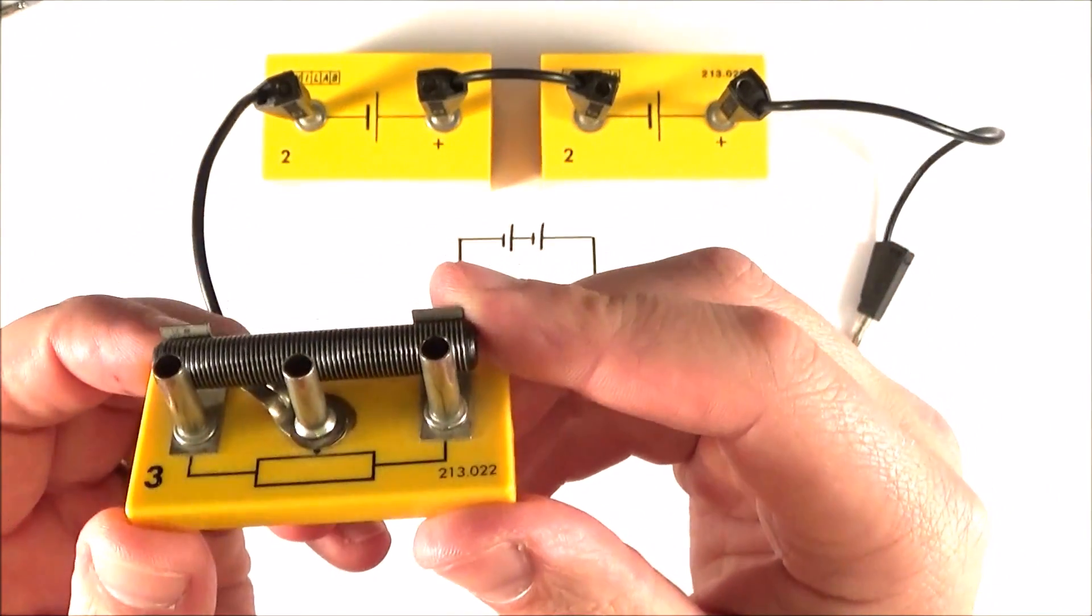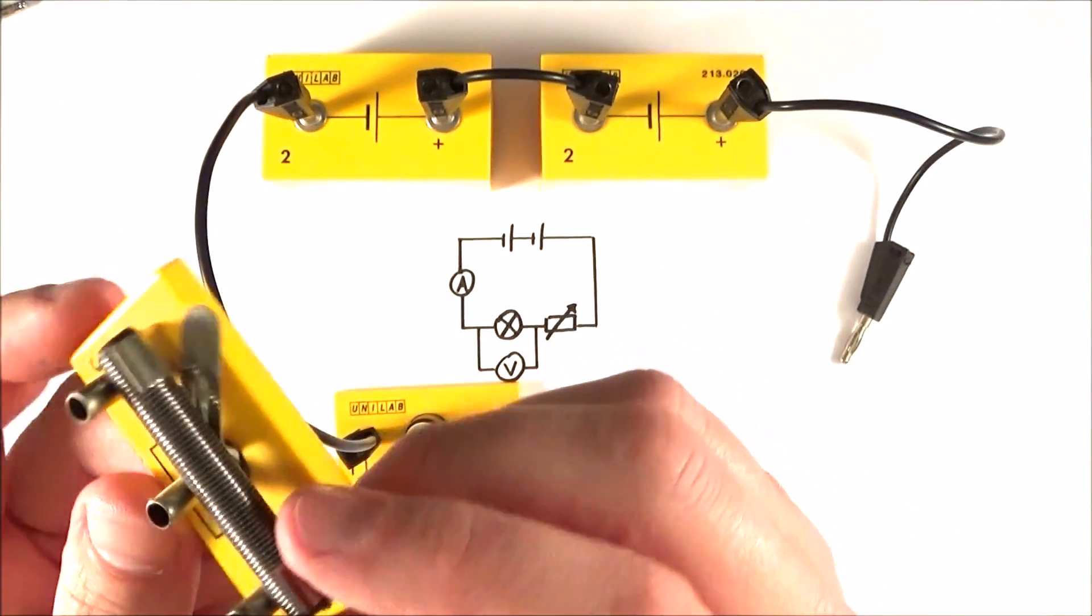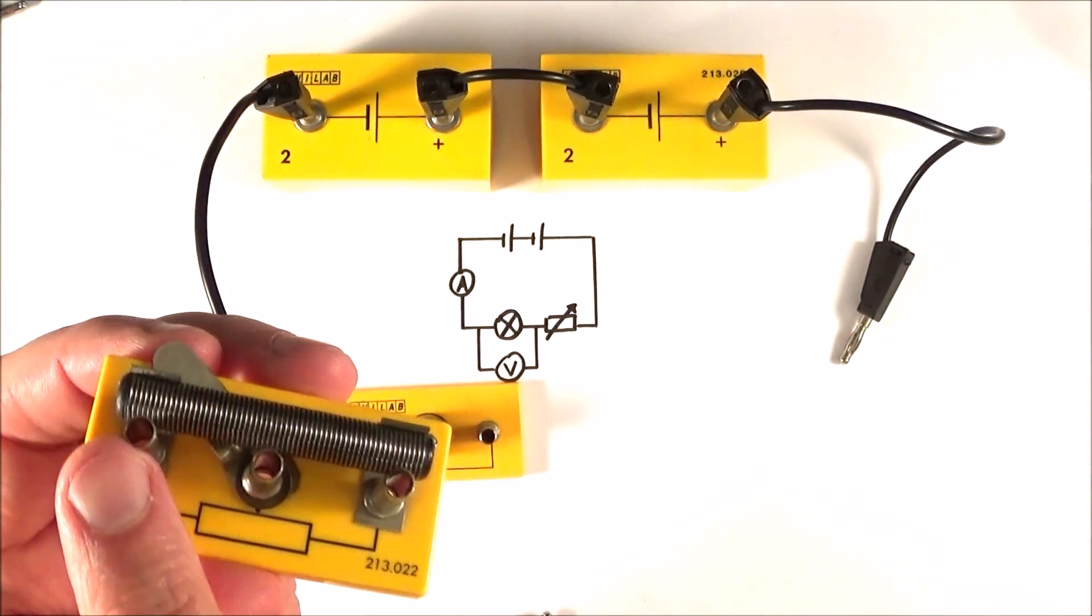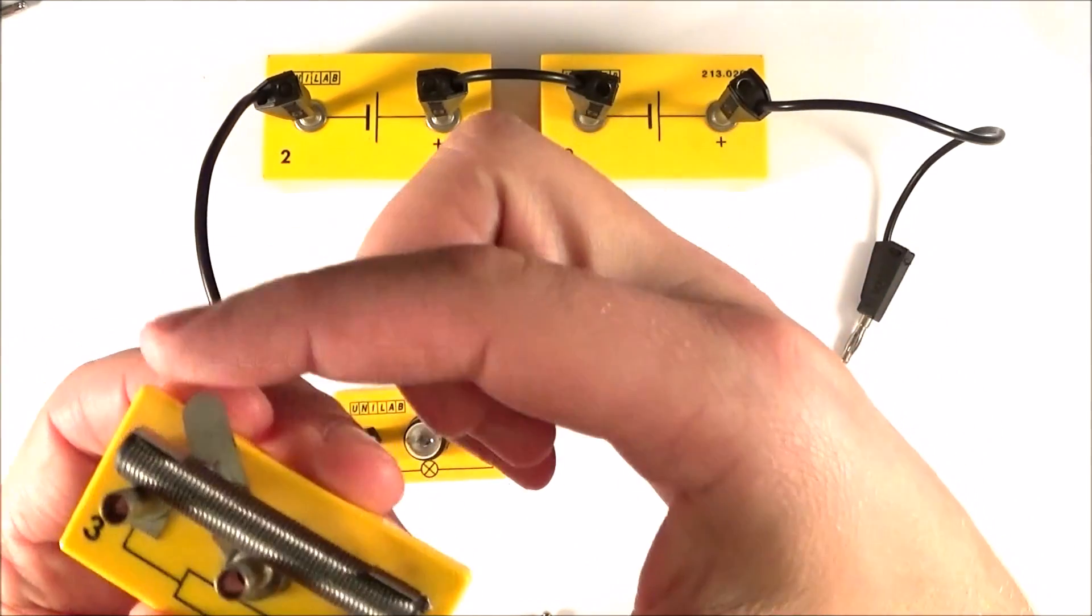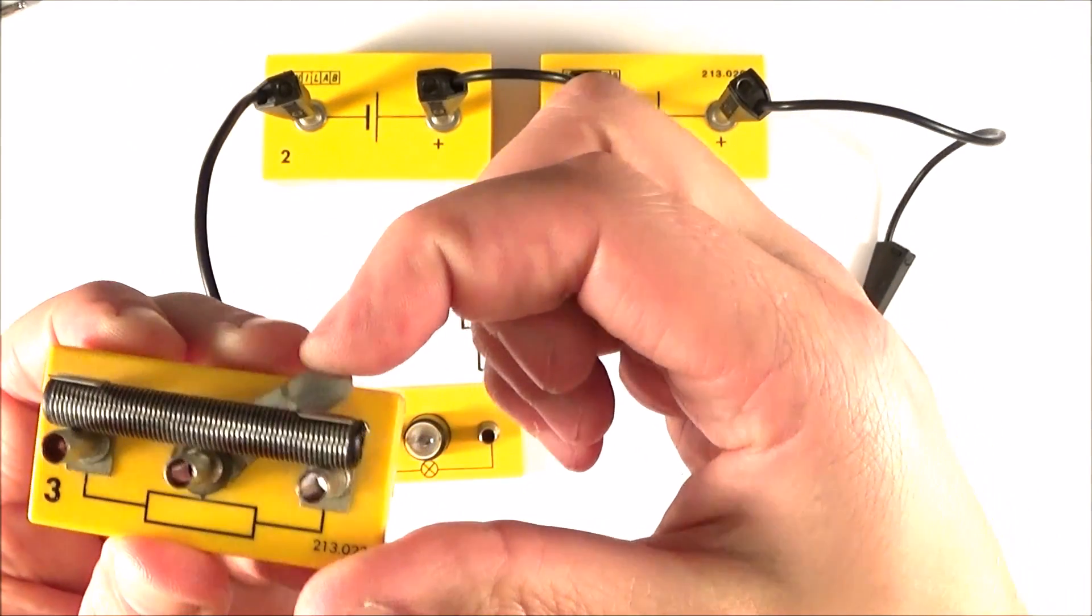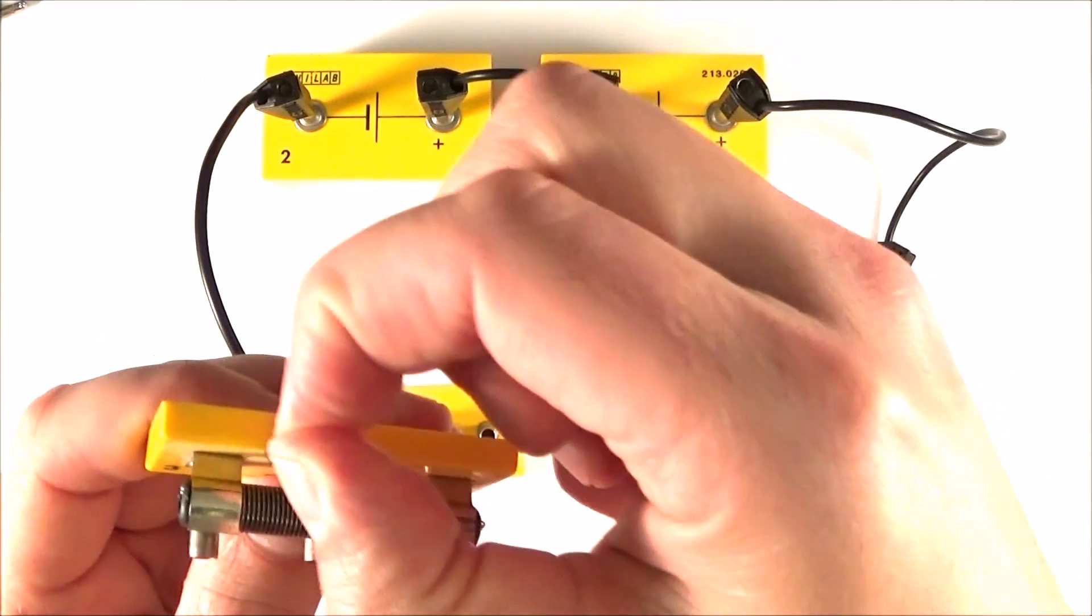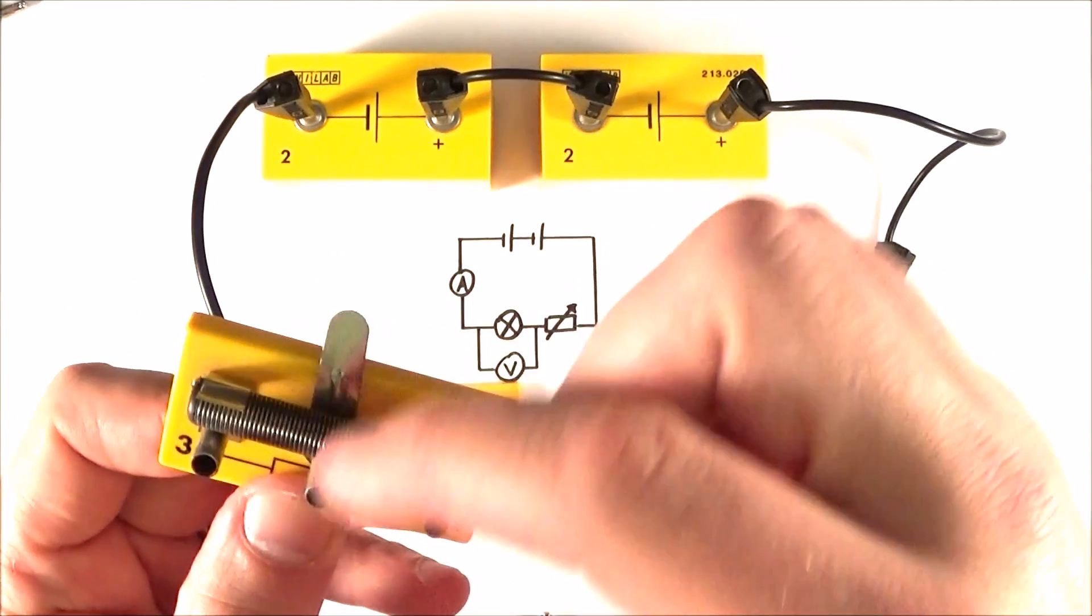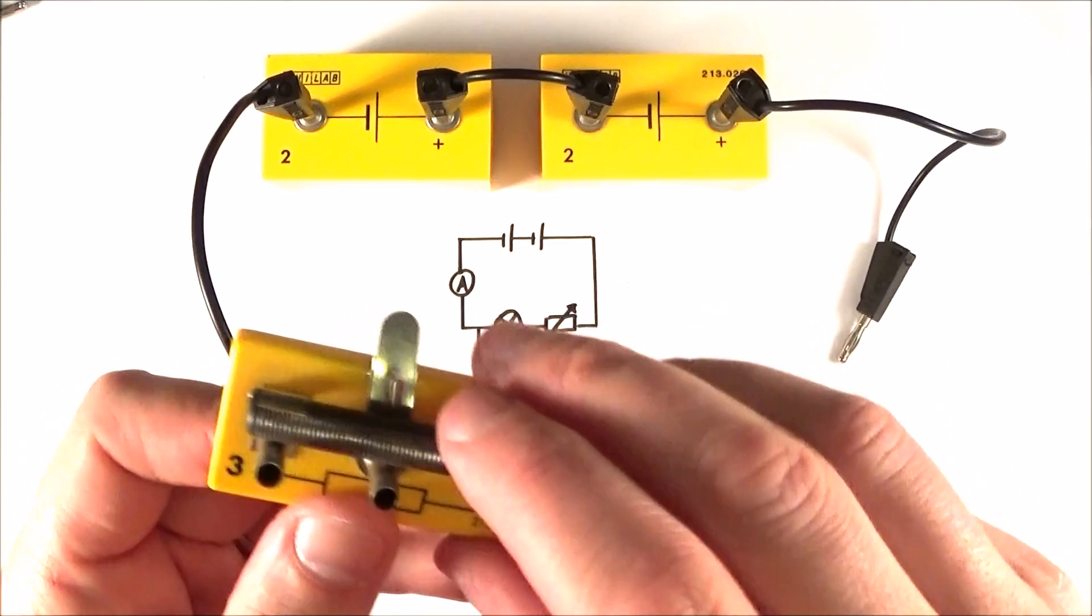So here I have a variable resistor. Now this one here, you can see how it works. If we connect to this input and this input, then what I can do is alter the total resistance by moving this slider along this spring here. And what we do there is affect the total amount of wire that the current has to go through.